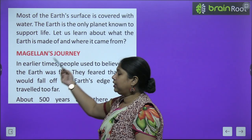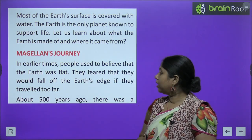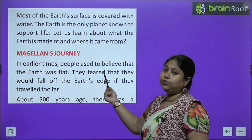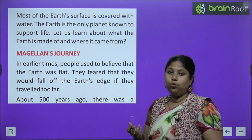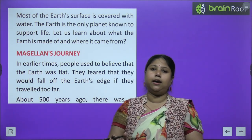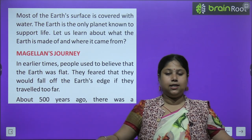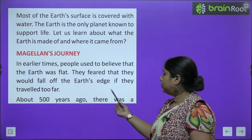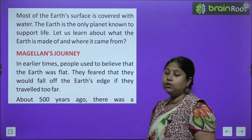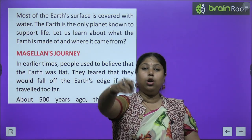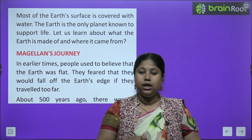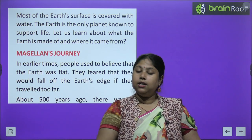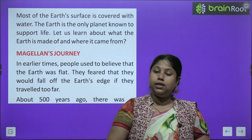Usse pehle hum Magellan ki journey ke baare mein padhte hain. In earlier times, people used to believe that earth was flat — pehle logon ko kya maanna tha ki earth round nahi hai, earth bilkul flat hai. They feared that they would fall off the earth's edge if they travelled too far — aur logon ko darr lagta tha, agar wo bahut door tak yatra pe nikal gaye, toh kahin wo earth ke kinaare pe aa jaayein aur gir na jaayein. Isi liye log zyada door travel nahi karte the.